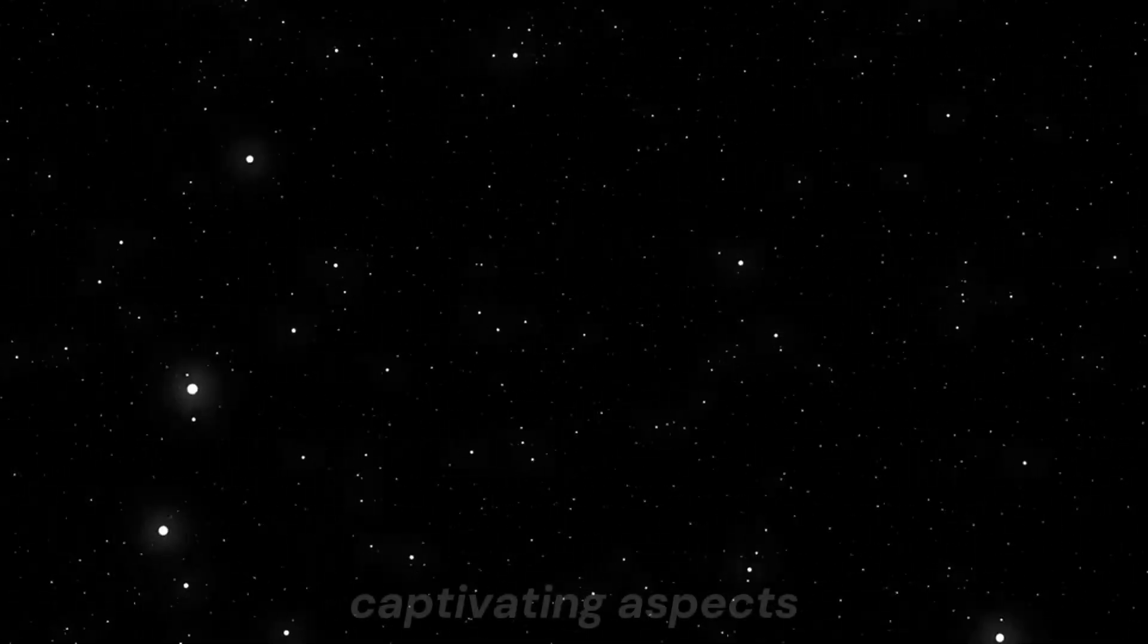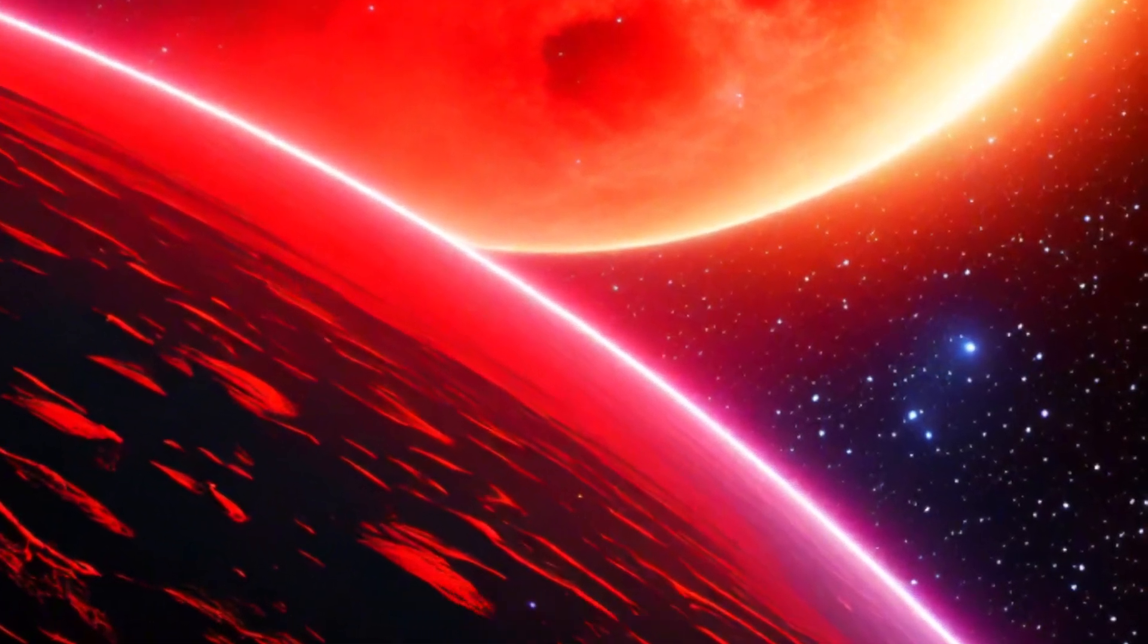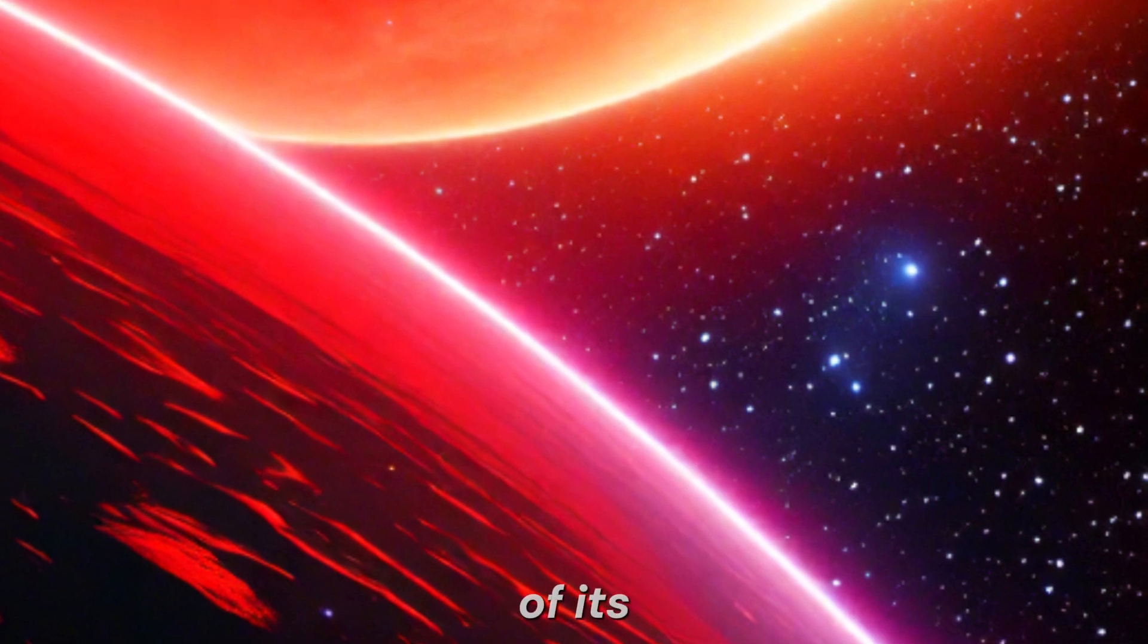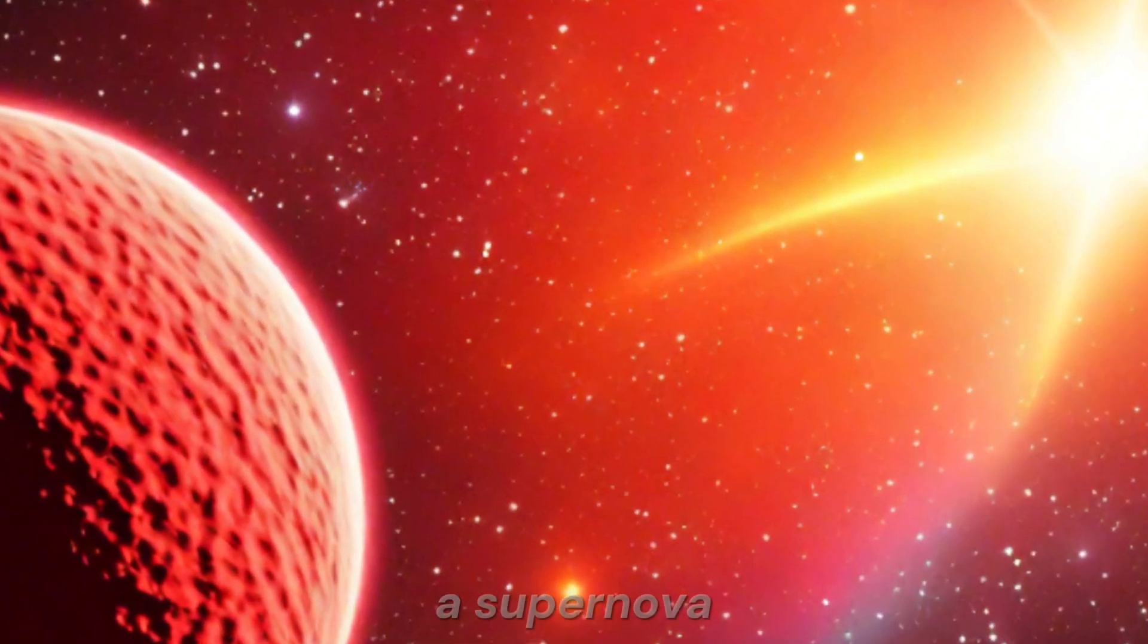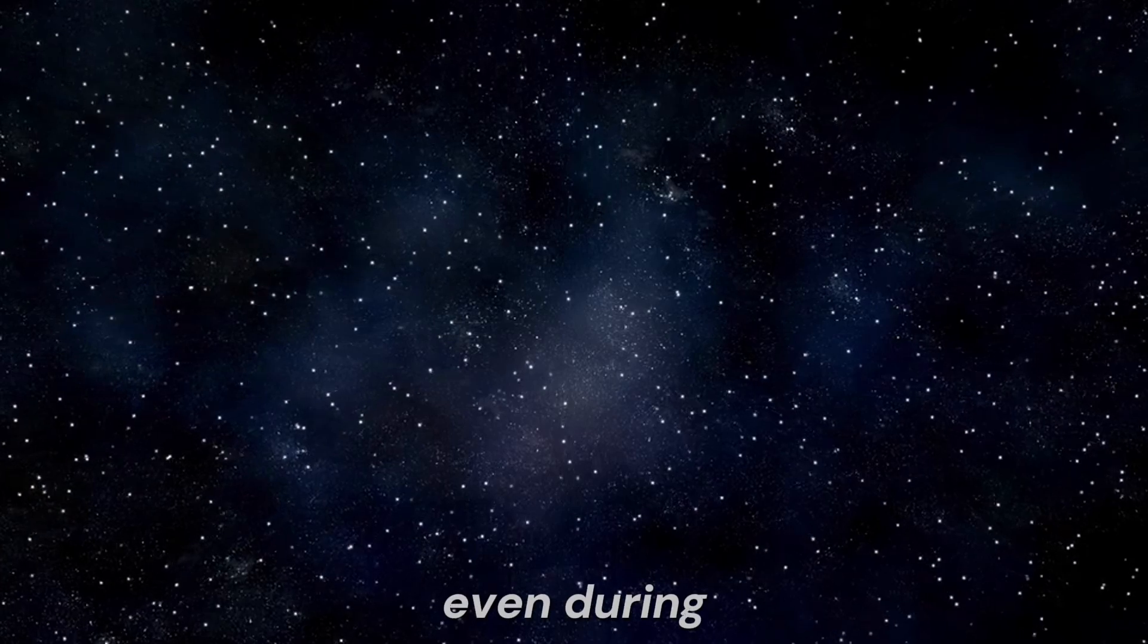One of the most captivating aspects of Betelgeuse is that it's in a stage of its evolutionary path called the Red Supergiant. This means Betelgeuse is in the final stage of its life and will soon undergo a supernova explosion. When this happens, Betelgeuse will become one of the brightest objects in the sky and will be visible even during the day.